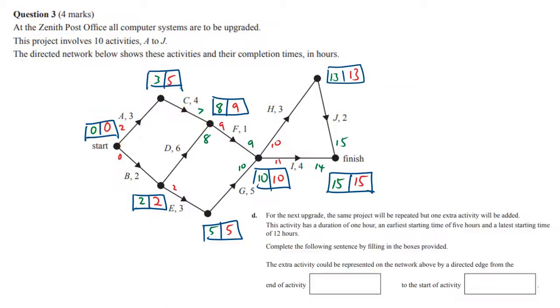For the next upgrade, the same project would be repeated but one extra activity will be added. It has a duration of one hour, EST of five, and an LST of 12. If we look at all our ESTs, which are all the green numbers, can't see any fives anywhere except in one place, and that's coming off the end of E.